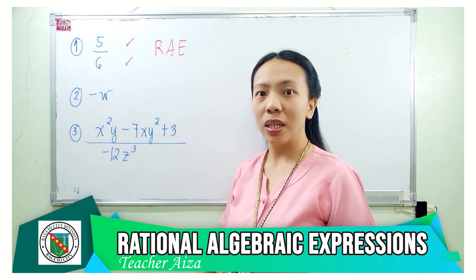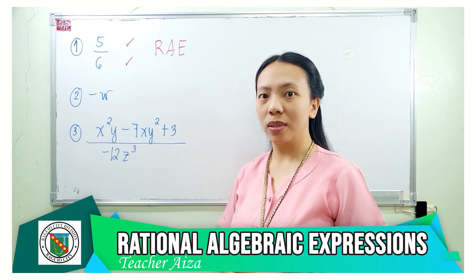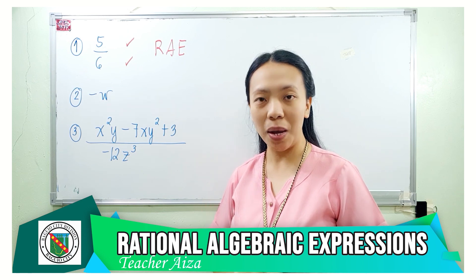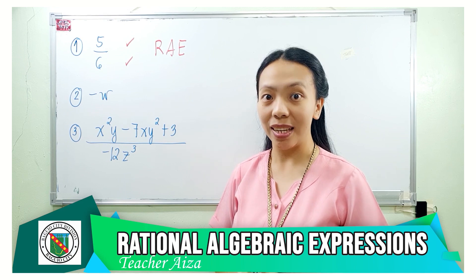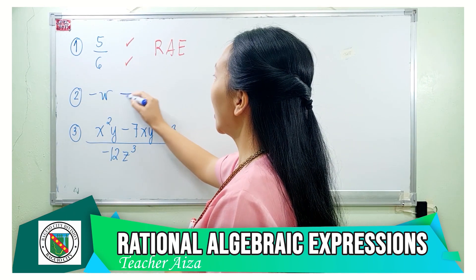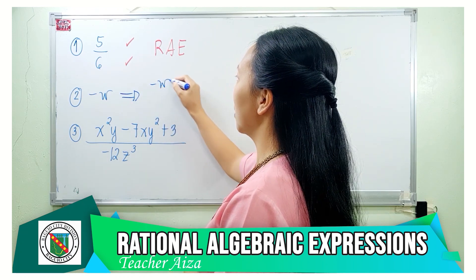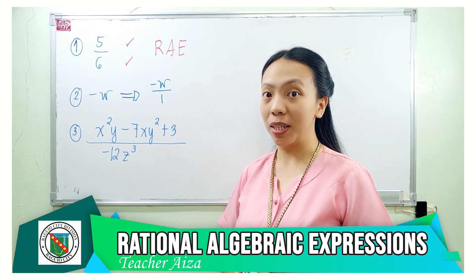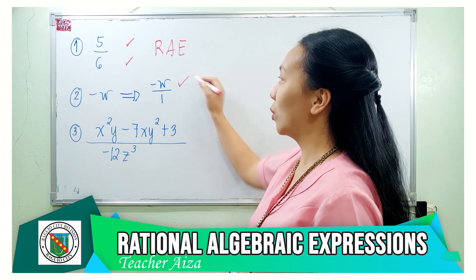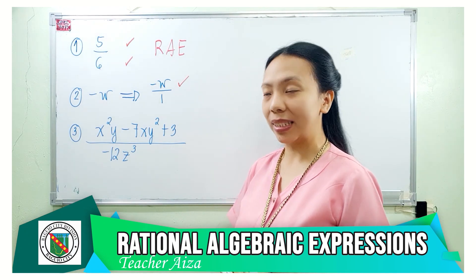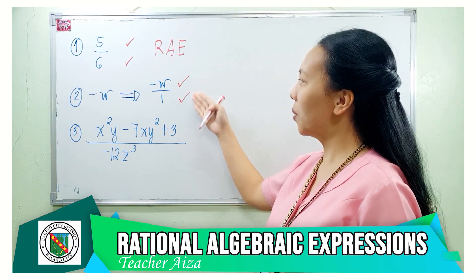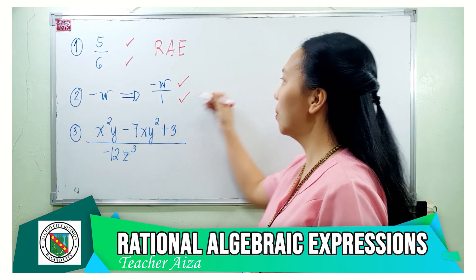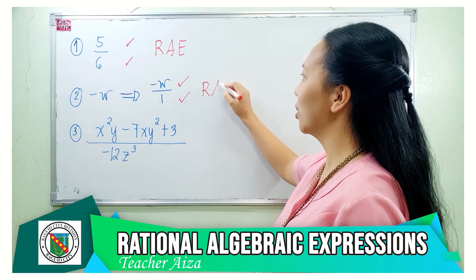What about number 2? Negative w — does it have a denominator? Yes. What is its denominator? It is 1. Therefore, we can rewrite that as negative w over 1. Is negative w a polynomial? Yes. What about 1? Yes. Since both the numerator and the denominator are polynomials, therefore negative w is a rational algebraic expression.